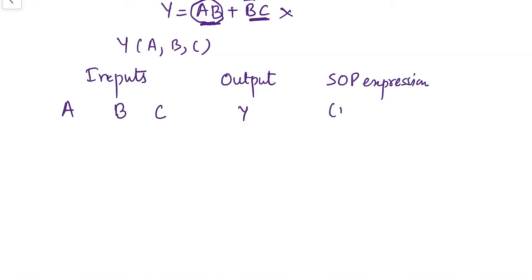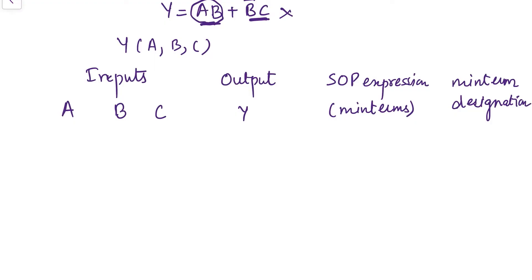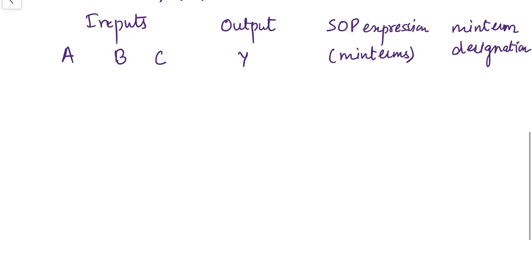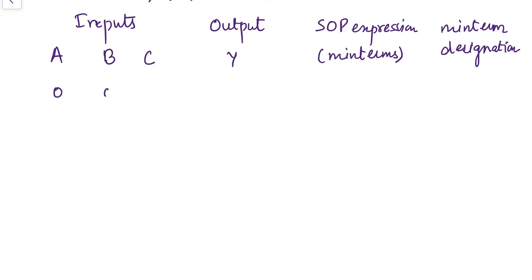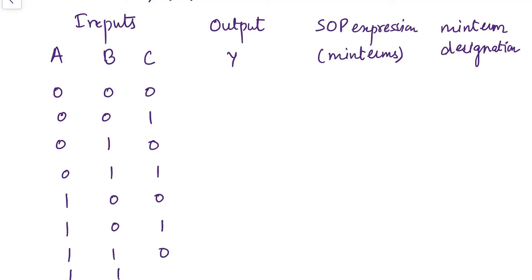These SOP expressions are also known as min terms, and min terms are designated in a specific way. For three inputs we have eight combinations: 000, 001, 010, 011, 100, 101, 110, and finally 111.